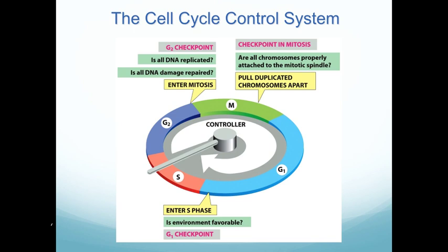For example, if you look in G1 phase, before the cell moves on to replicate its DNA, it will stop at G1 and ask itself: is the environment favorable to replicate? Do we have everything we need? Are the organelles duplicated? Have we grown in size? Remember, G1 phase is where you get the majority of cell growth.